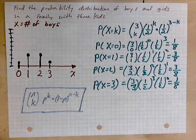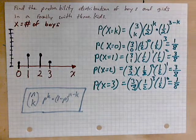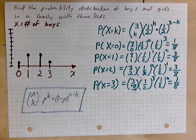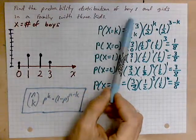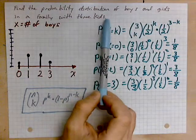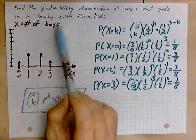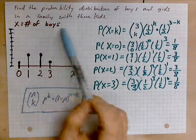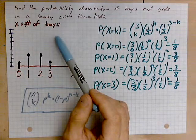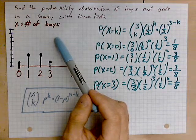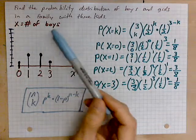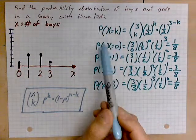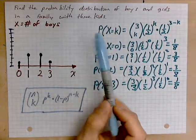In a previous video I have derived what you see in front of you now, but I'll go over it for about a minute. Find the probability distribution of boys and girls in a family with three kids. X is the number of boys — this is our random variable. We know this is a binomial random variable because you either have a boy or a girl, so the probability is fixed. The number of trials, meaning the number of kids, is also known to be three.